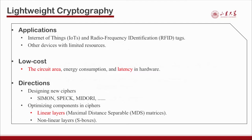There are many criteria for designing lightweight primitives. The most popular one is gate equivalents (GE) required to implement a cipher, because it nicely approximates the complexity of the circuit area. Meanwhile, another criterion — latency — is also crucial and has been attracting more and more attention, because it plays an important role in the low energy consideration of ciphers.